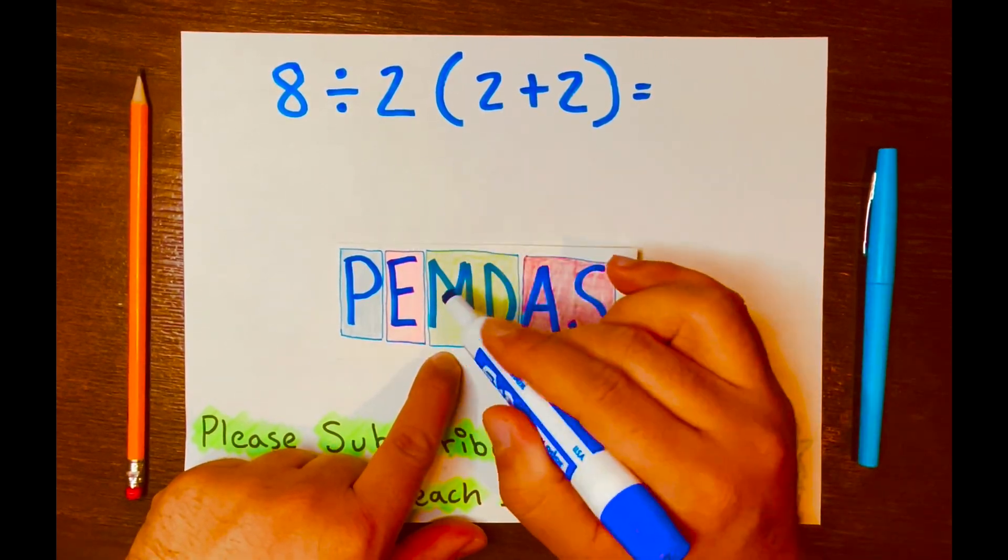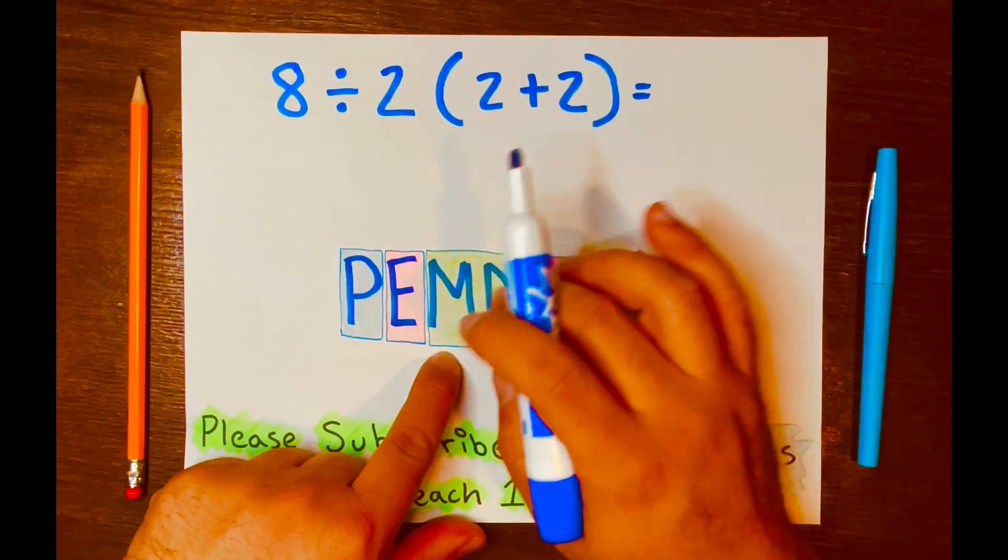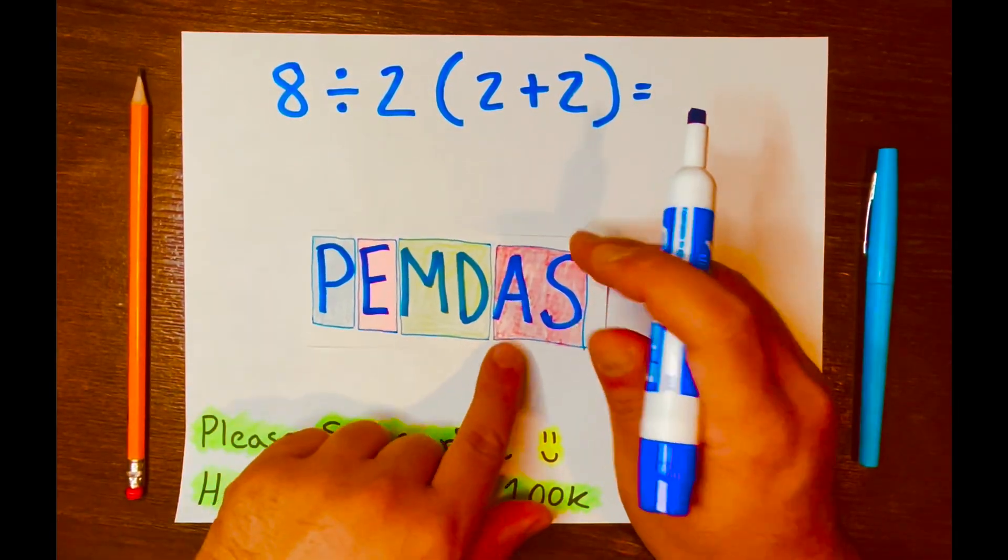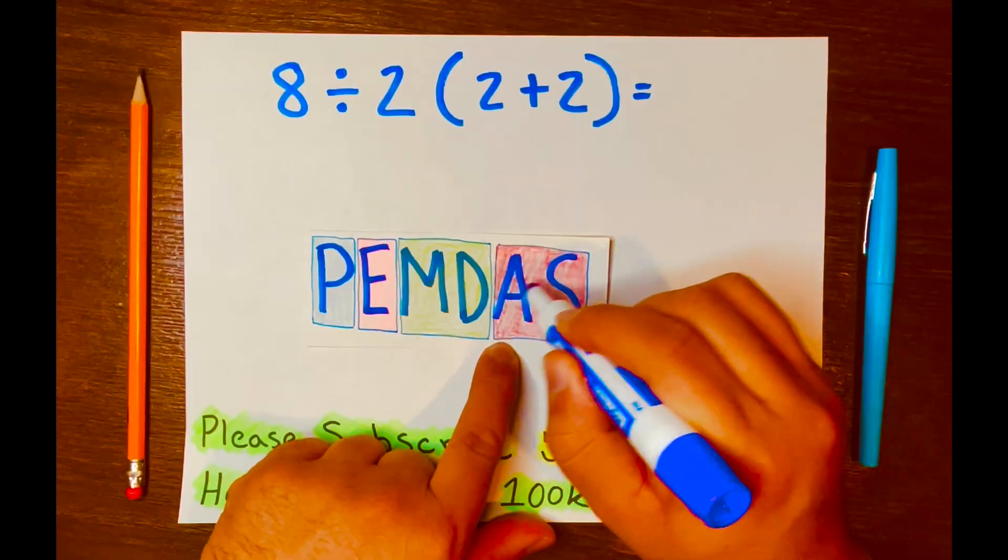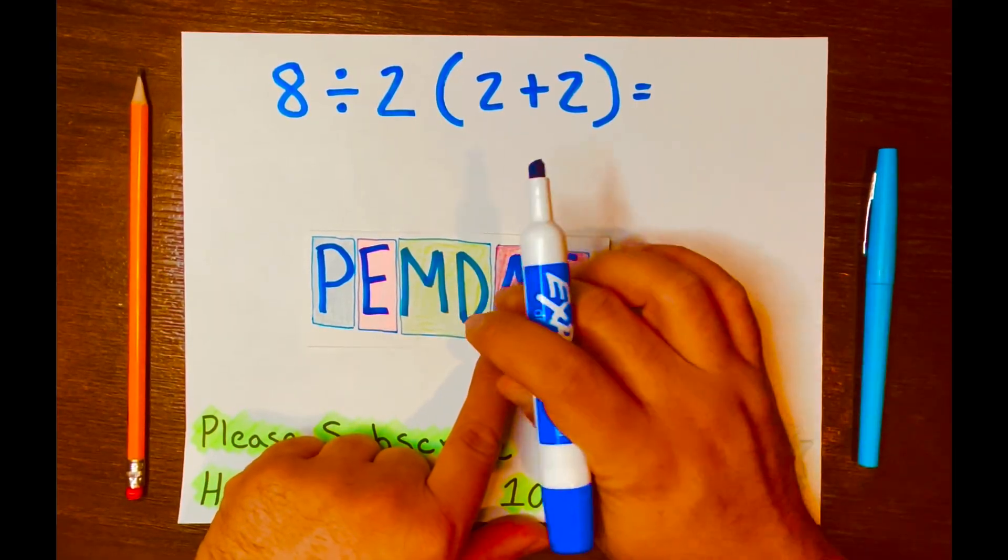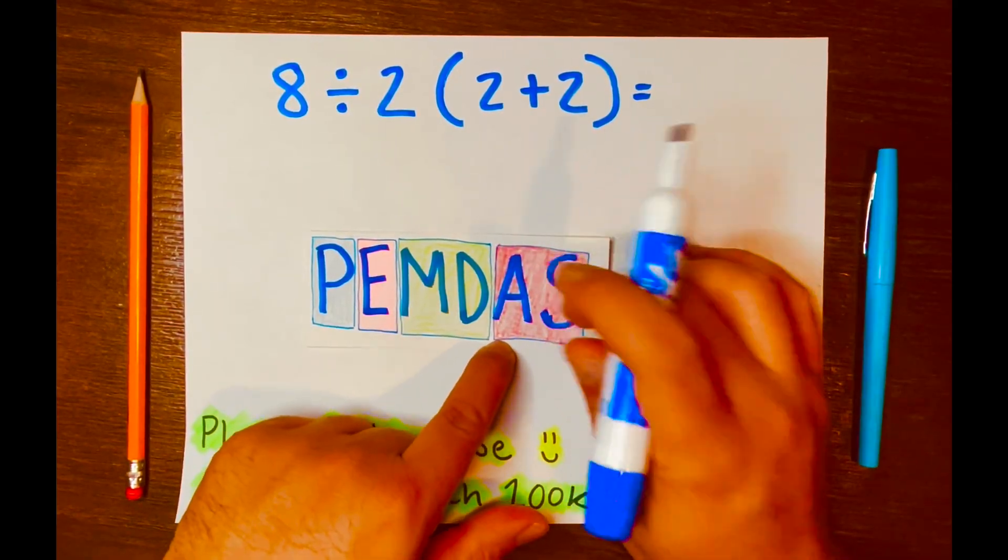MD, both operations, multiplication and division, both operations are both within its own level. And then lastly, AS, addition and subtraction, both operations are both within its own level.